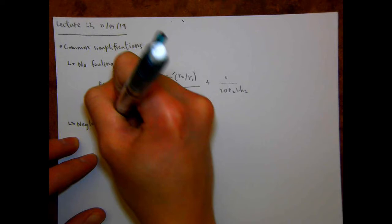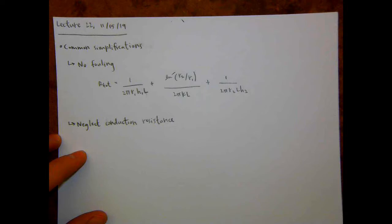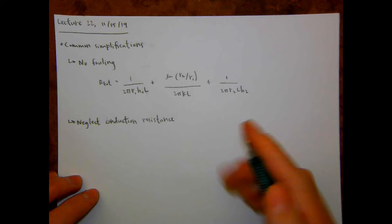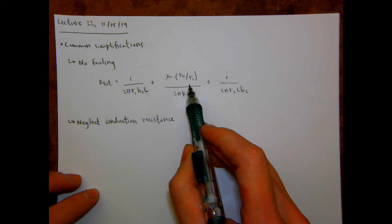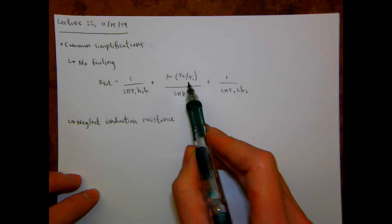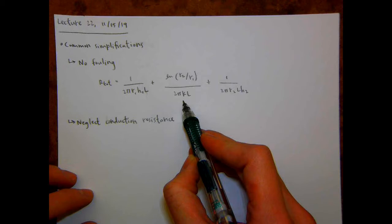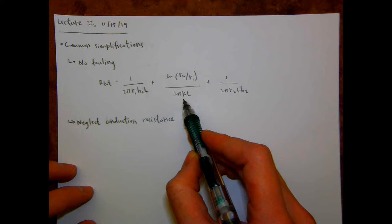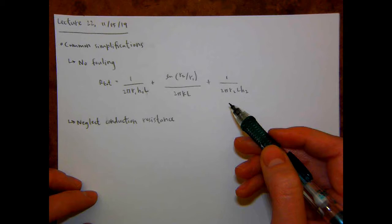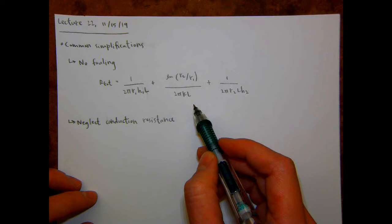We're also often going to neglect the conduction resistance of the inner wall. Mathematically, this comes from one of two things: you could assume the wall is infinitely thin so that R1 and R2 are equal, making the natural log of one equal zero, which forces that term to zero. Or you could say the thermal conductivity is infinite, so you'd have something going to infinity in the denominator, also forcing that term to zero. Either condition allows you to neglect the thermal resistance.